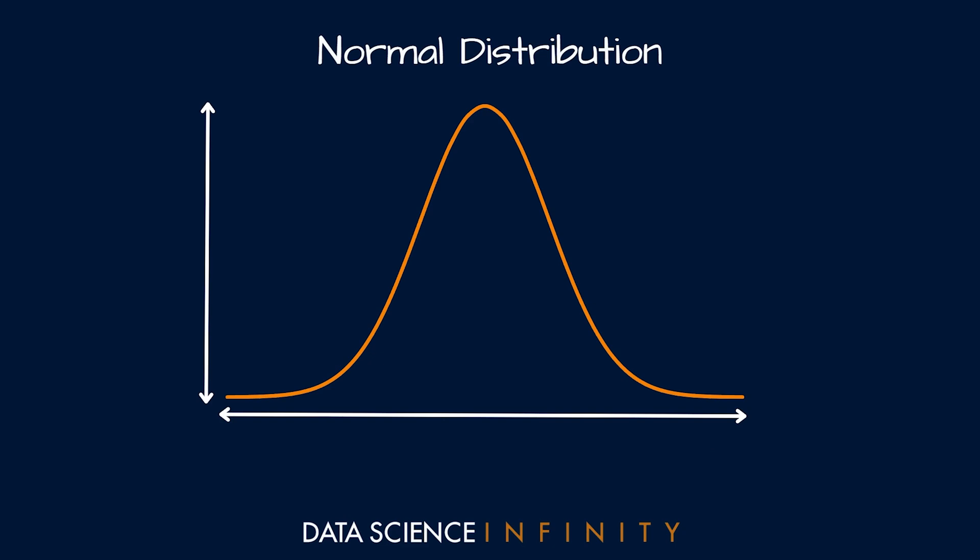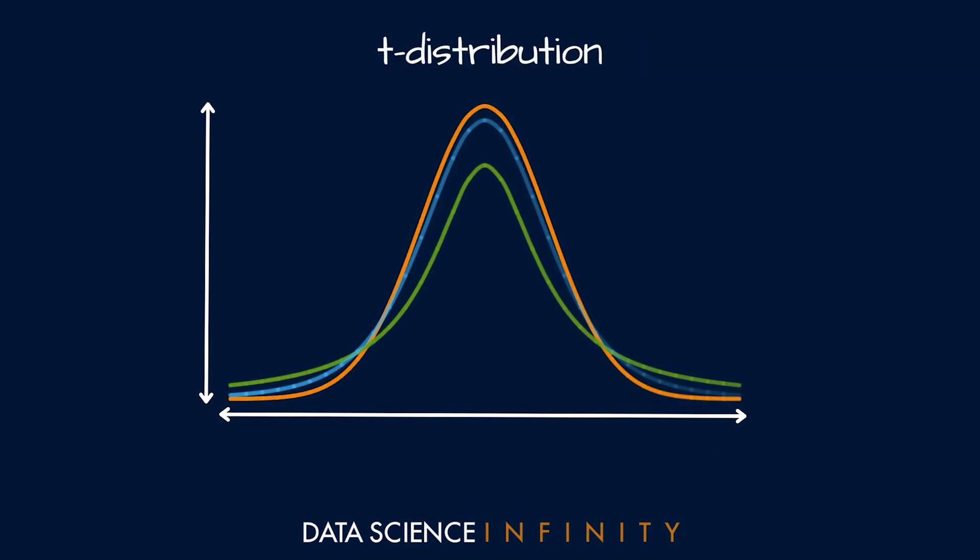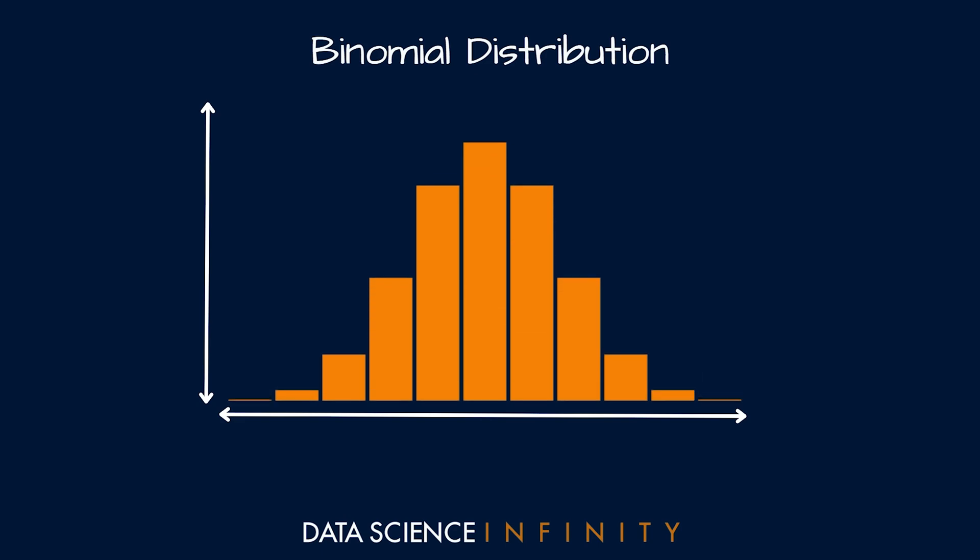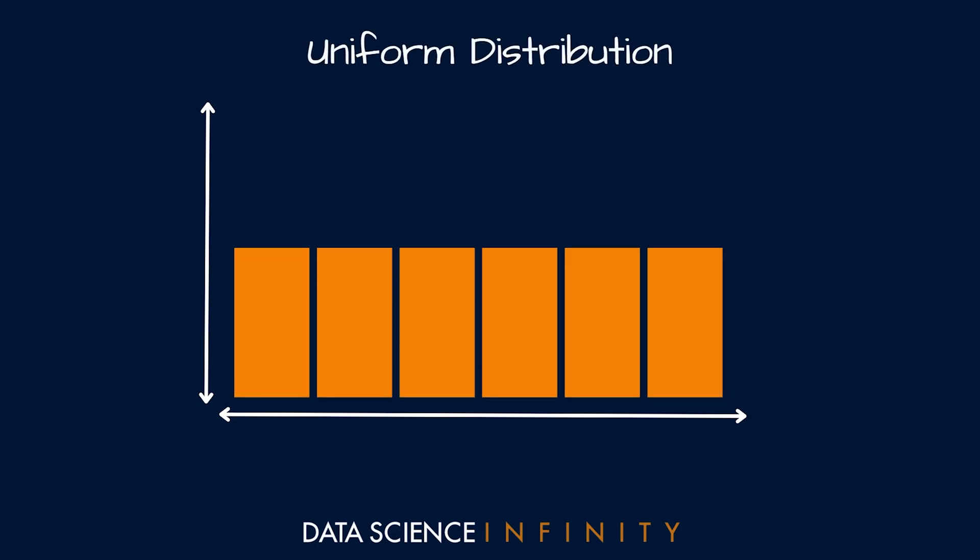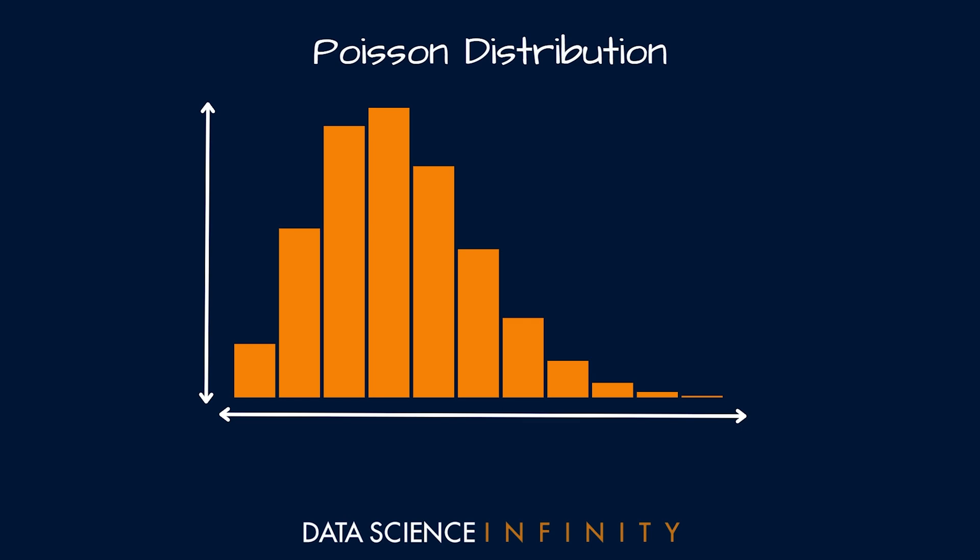In this video we are going to cover the six most common distributions that you will come across: the normal distribution, the t-distribution of which we can see several versions on screen here, the binomial distribution and the related but simpler Bernoulli distribution, the uniform distribution, and the very interesting Poisson distribution. So let's do this.